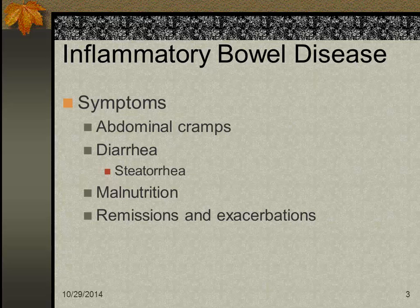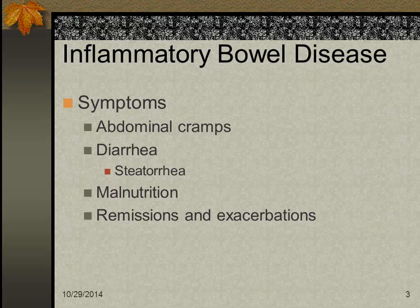Symptoms: both Crohn's and ulcerative colitis involve abdominal cramps and chronic urgent diarrhea. With Crohn's, the stool can be very pale — called steatorrhea — where the body is expelling fat. With ulcerative colitis, you tend to see more blood, which makes sense given its location. Patients may have fever, weight loss, electrolyte imbalances, anemia, and low albumin. They are also at more risk for colon cancer and live a life of remissions and exacerbations.